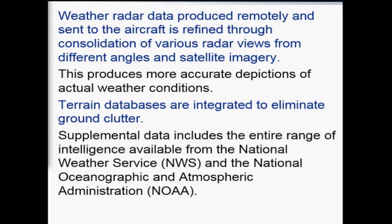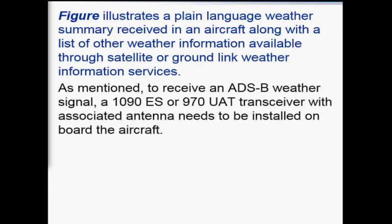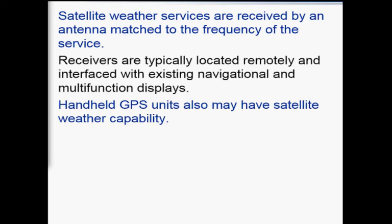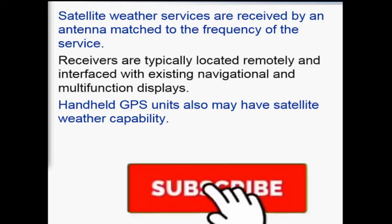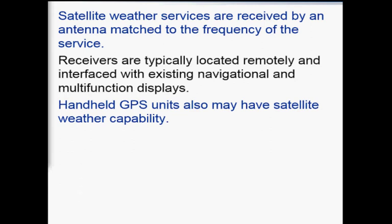Supplemental data includes the entire range of intelligence available from the National Weather Service and the National Oceanic and Atmospheric Administration (NOAA), which provide weather-related information for aviation. To receive ADS-B weather signals, a 1090 ES or 978 UAT transceiver with an associated antenna must be installed onboard the aircraft. Satellite weather services are received by an antenna matched to the frequency of the service, with receivers typically located remotely and interfaced with existing navigational and multi-functional displays. Handheld GPS units may also have satellite weather capabilities.